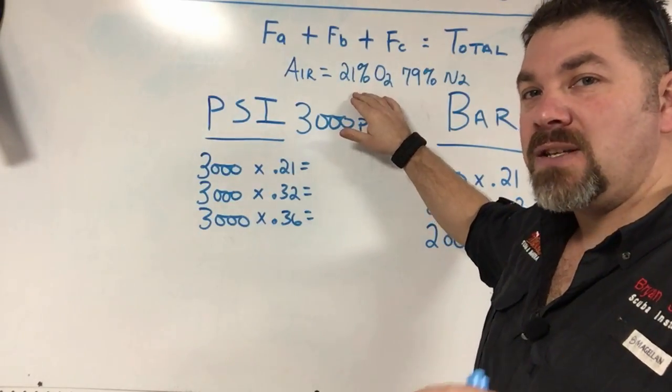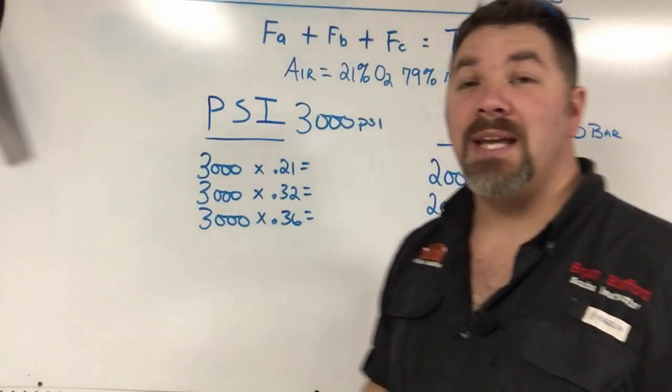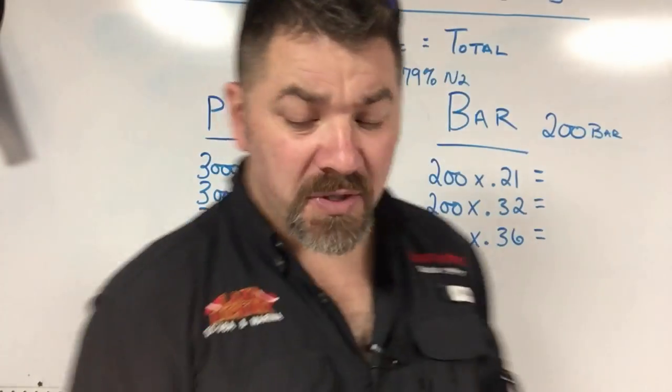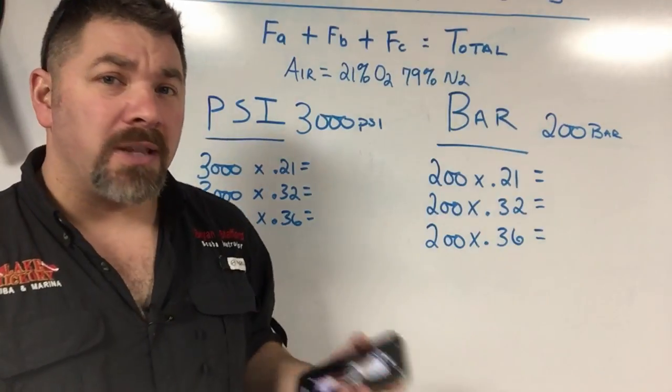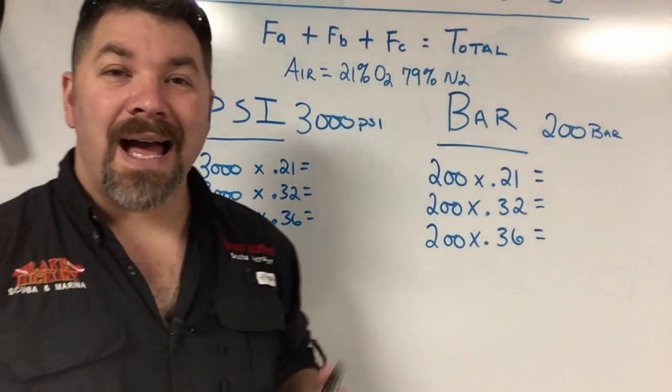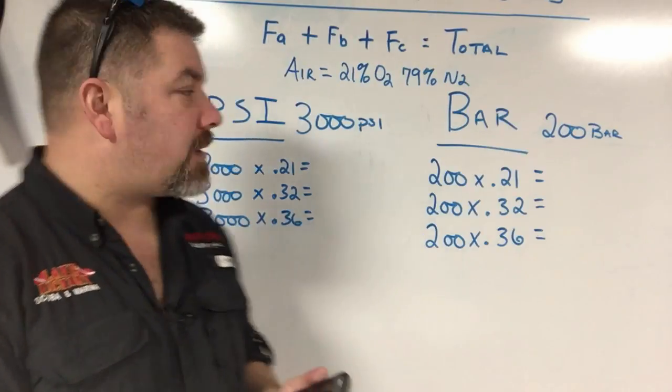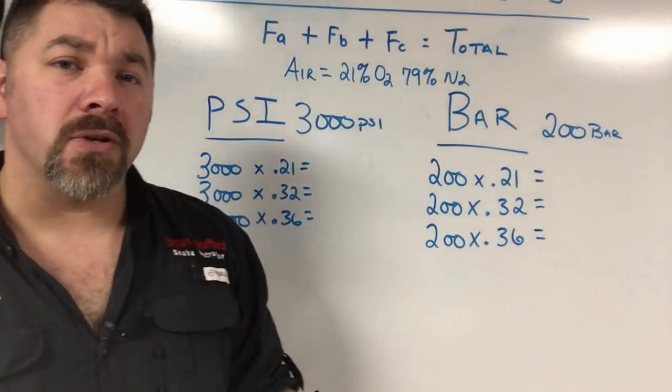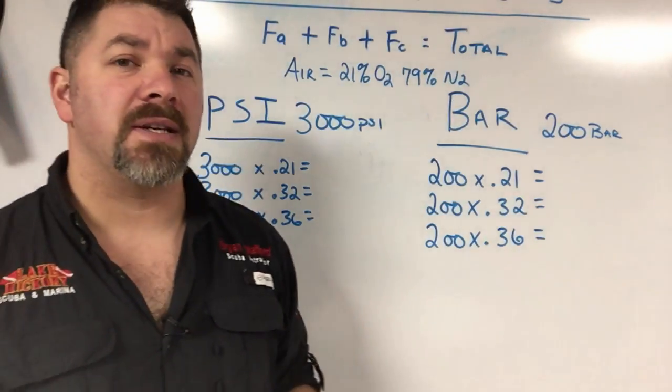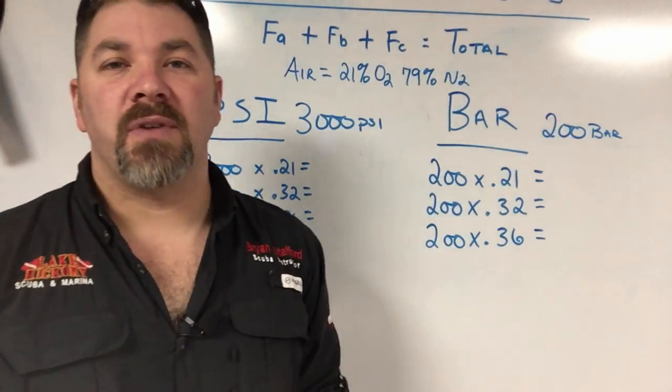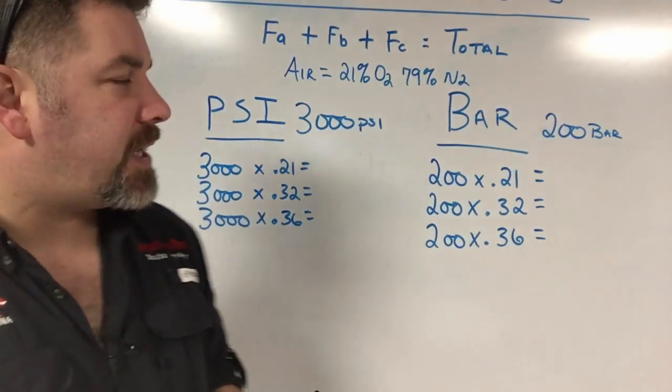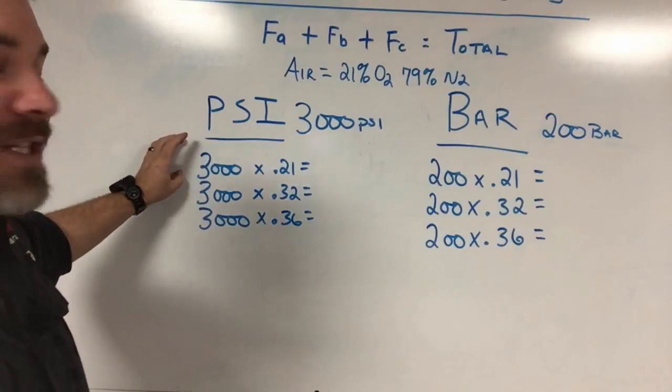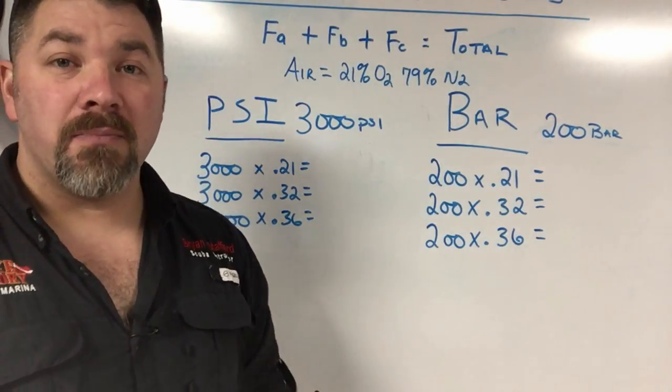That's fine and dandy, except I need to know how much PSI or bar that 21% actually takes up. We're going to do this in both the imperial system and the metric system using a calculator. You can follow along whether you're using a high pressure or low pressure cylinder—just change the variable for your starting pressure and blend.